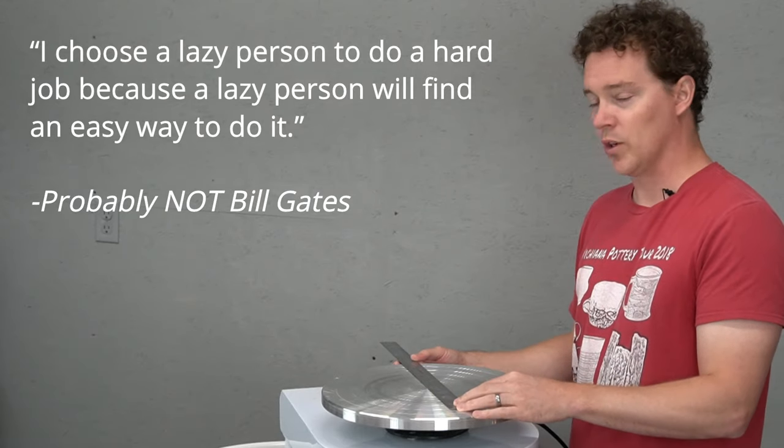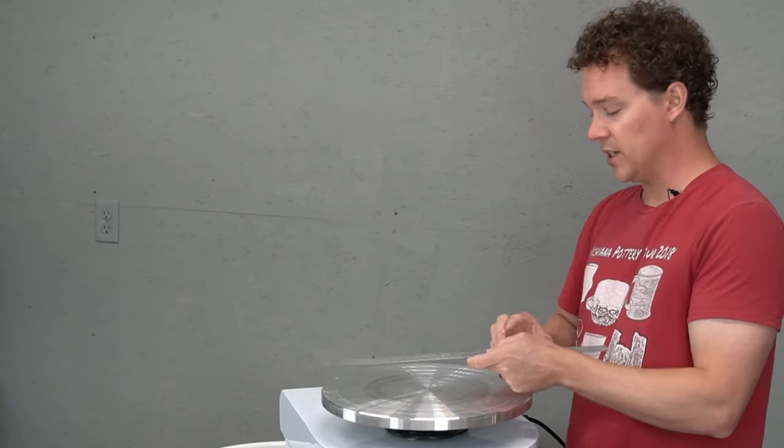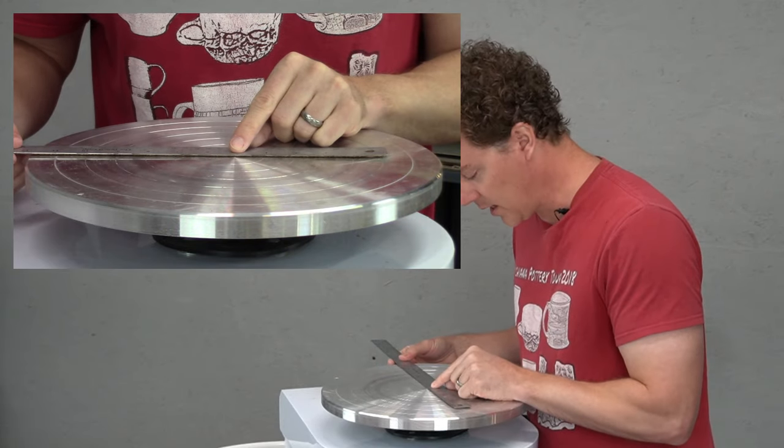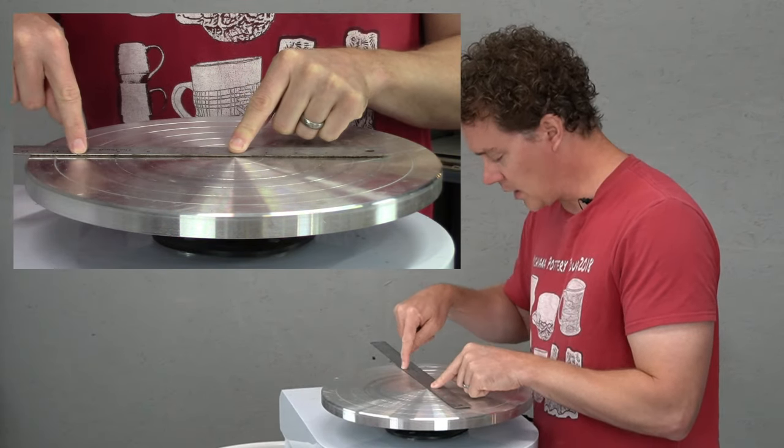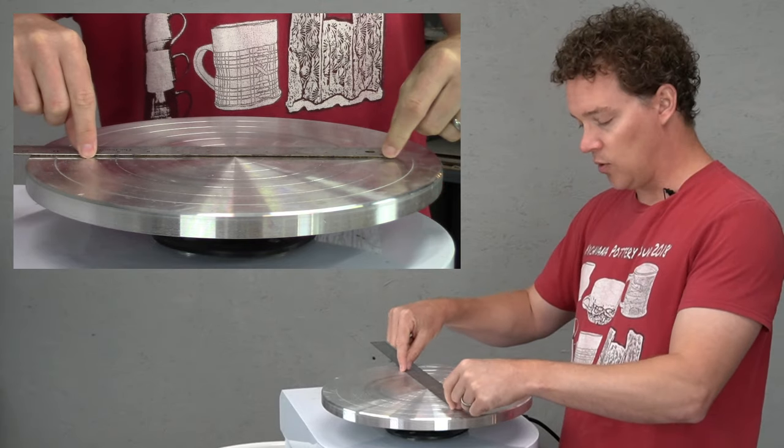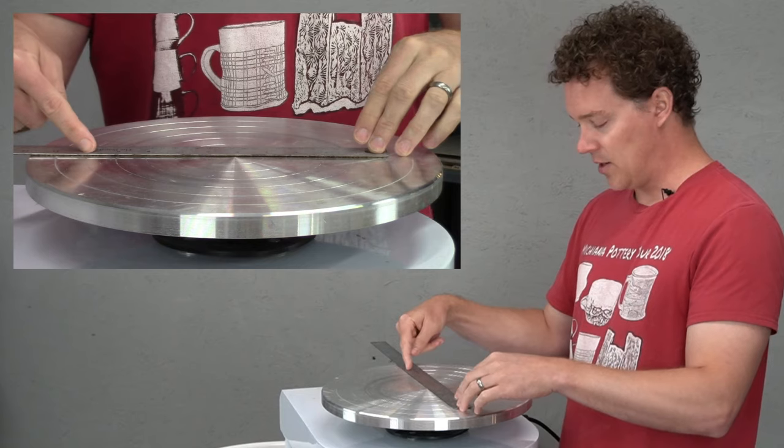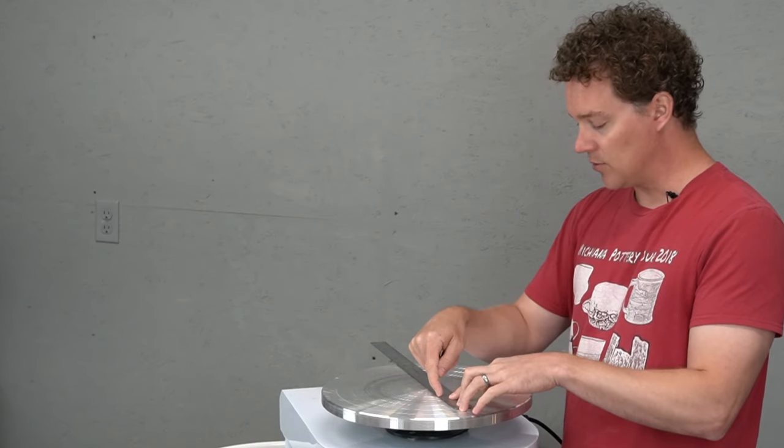So I'm going to just use my ruler here. Make sure your ruler is nice and straight of course, and I'm going to put my five inch mark right in the middle and then I'm going to mark at 10 inches and zero inches. So my holes will be exactly 10 inches apart. They should be exactly centered on the wheel because my nice straight line is going right through the middle.